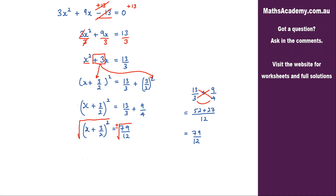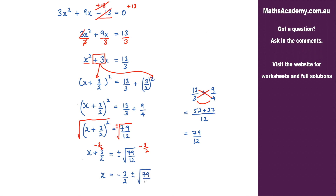Now on the left hand side, the square root and the squared will cancel. So we'll have x plus 3 over 2, and that is equal to plus or minus the square root of 79 over 12. The last thing I need to do is to eliminate this positive 3 over 2 from the left — I'm going to subtract 3 over 2 from both sides. So I end up with x is equal to negative 3 over 2 plus or minus the square root of 79 over 12.